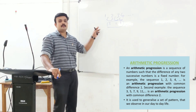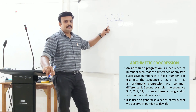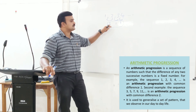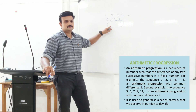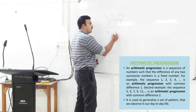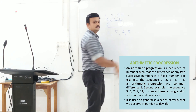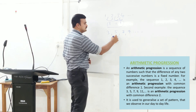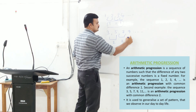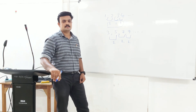So an Arithmetic Progression is a sequence of numbers such that the difference of any two consecutive numbers is a fixed number like this. For another example, consider 3, 5, 7, 9. In this series, the common difference is 2. So this is also an AP, an Arithmetic Progression.